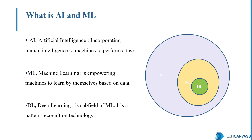In AI there are a lot of other complex jargons and methodologies involved. ML is a subset of AI. Machine learning is like giving a machine the ability to learn by itself. For example, if you search for something on Google and spend some time on specific links, with the help of ML, Google will understand your specific needs and accordingly show those links or ads to that user.